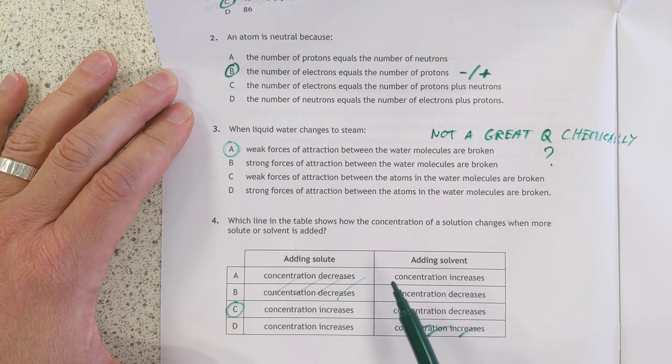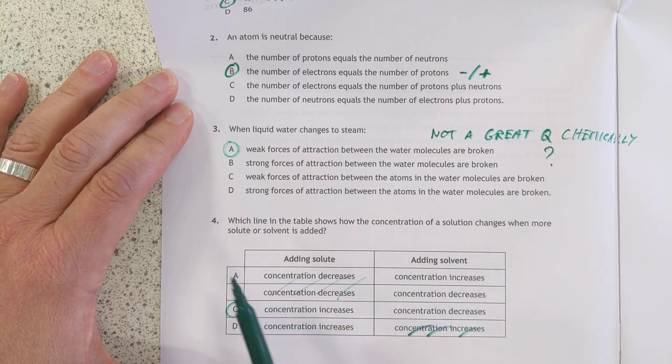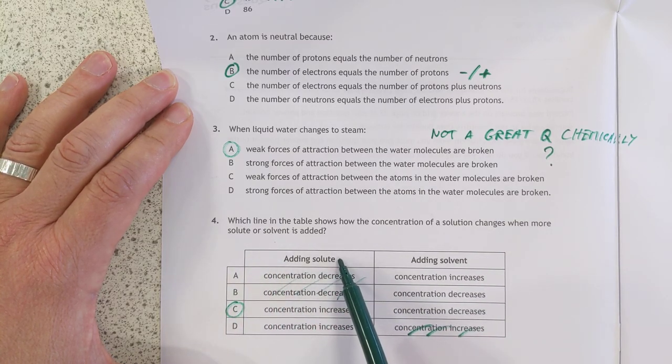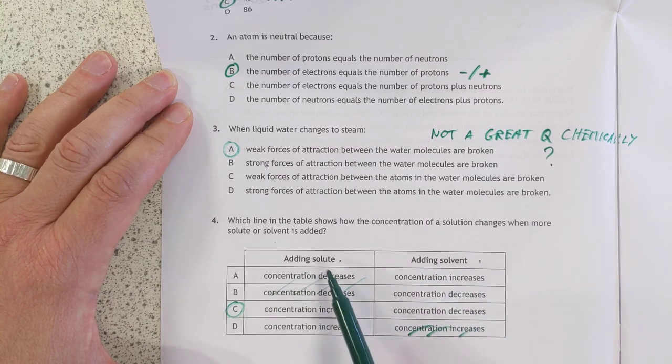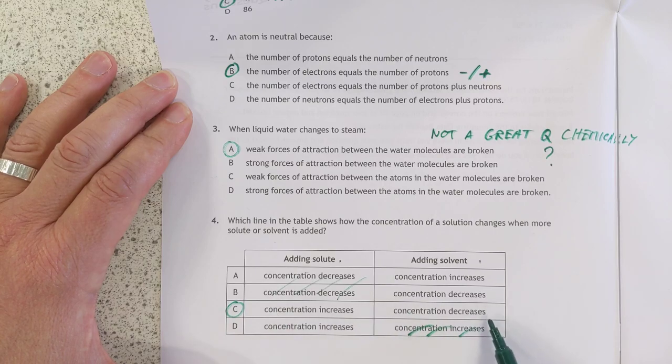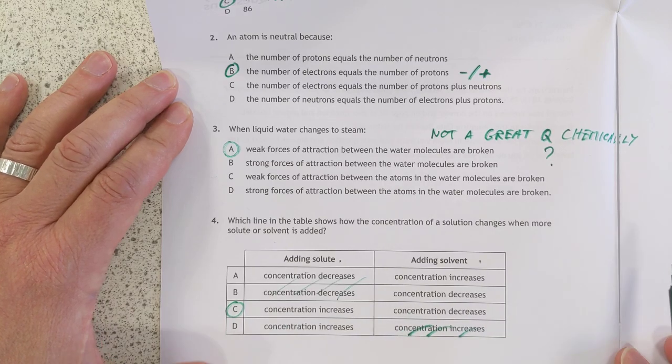Number four, concentration of a solution changes. You're adding more solute or more solvent. The solute is the solid, the solvent is the liquid. So if you add more solid, then the concentration has to increase. And if you add more liquid, then the concentration has to decrease.